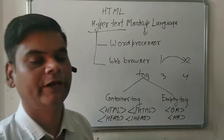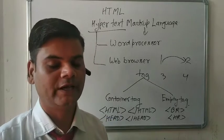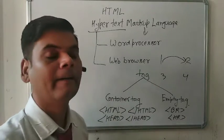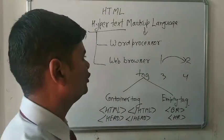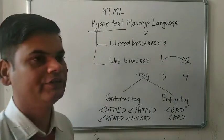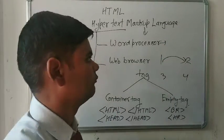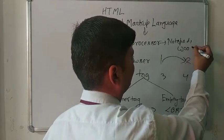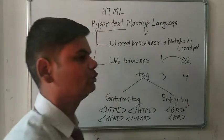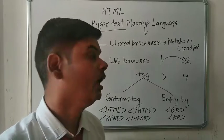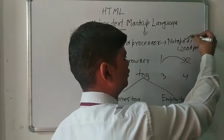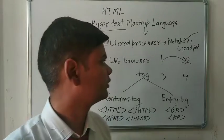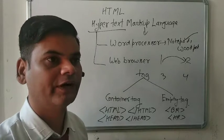Now we have to discuss what things we need when working on HTML. We need two things: first is the word processor, and second is the web browser. A word processor is software used for writing the HTML page. For example, we use Notepad or WordPad — they are the two most famous word processors used for HTML. Most of the time we use Notepad.